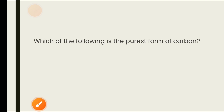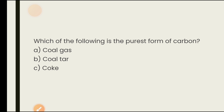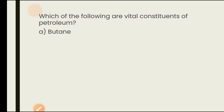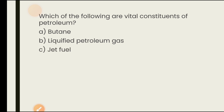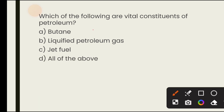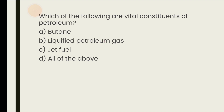Which of the following is the purest form of carbon? Options are coal gas, coal tar, coke, none of the above. The purest form of carbon is coke. The answer is C — coke. Which of the following are vital constituents of petroleum? Options are butane, liquefied petroleum gas (LPG), jet fuel, all of the above. Butane, LPG, jet fuel, petrol, kerosene, and diesel are all components of petroleum. The answer is all of the above.